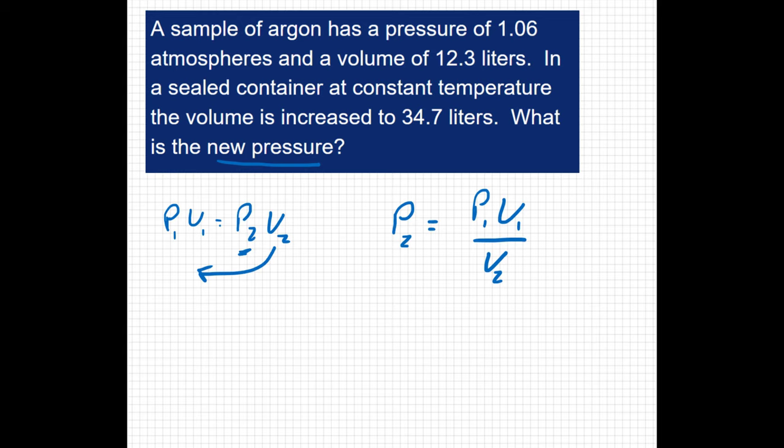So I can plug in my data here. I can say P2 equals P1, while the initial pressure is 1.06 atmospheres, times V1, which is 12.3 liters. And I'm going to divide that by V2, which is 34.7 liters. My liters cancel out. And I'm left with the atmospheres, which is good because I'm trying to find a pressure. So P2 equals 0.376 atmospheres.